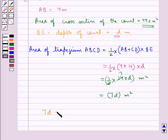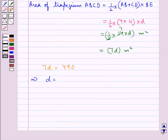So we have 7d equals 490. From here we get d equals 490 divided by 7. Now 7 times 70 is 490, so this is equal to 70.